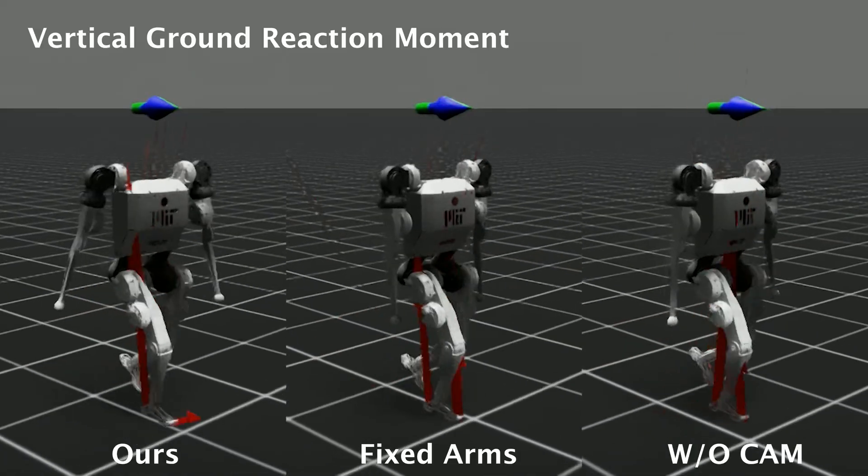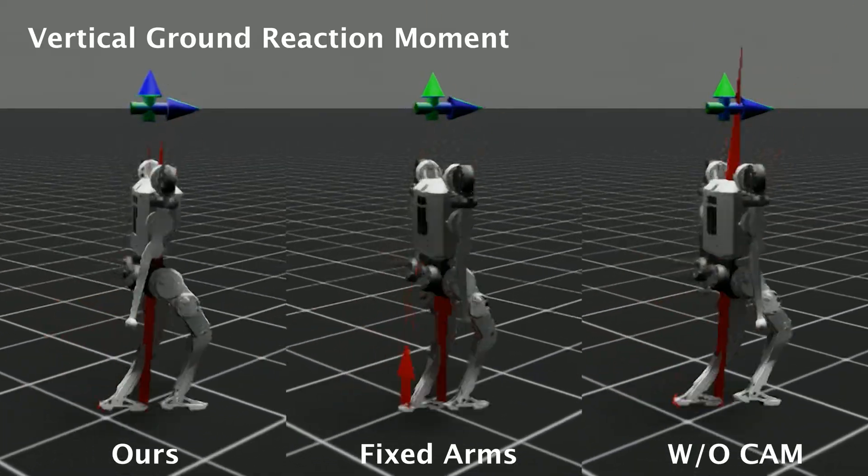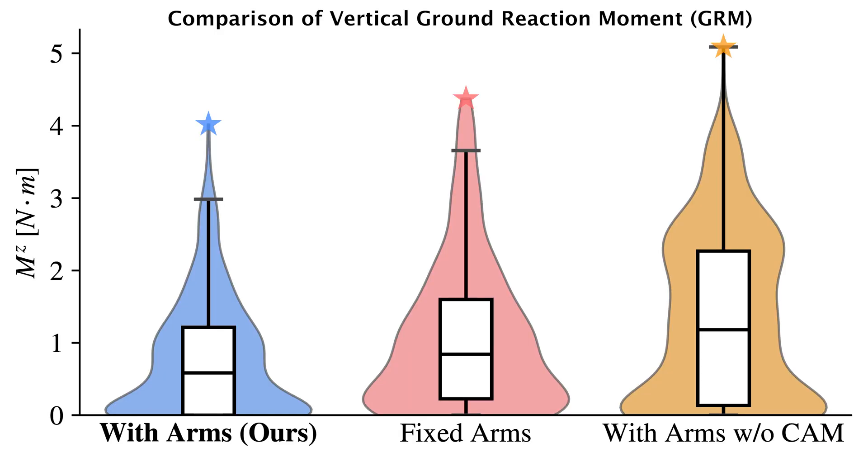We also compare our method to two baselines. Our approach most effectively minimizes vertical ground reaction moment using coordinated arm swing.